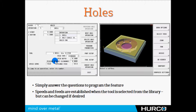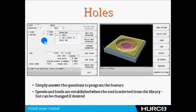The last features on this particular part are holes. I select a drilling cycle — you can do drilling, tapping, boring, reaming, whatever. In this example I'm just doing a drilling cycle. I select the drill, give it a depth, and when I select the tool the speeds and feeds come in automatically. There's also a pecking type if I choose to use it.